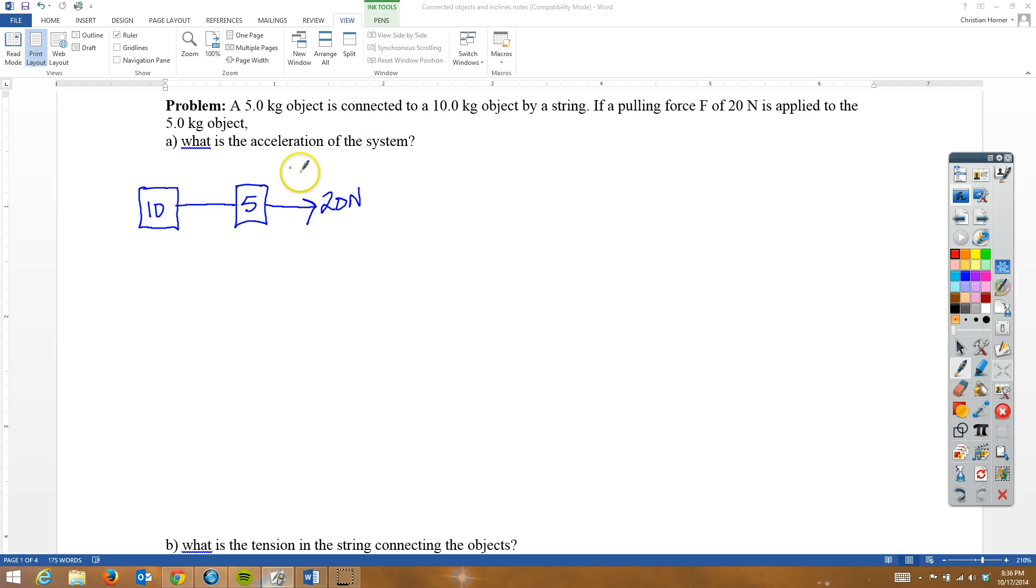So let's go ahead and circle our system so we know what it is, and they want to know what is the acceleration of the system. At this point, what we need to do is break everything down into a couple of different objects. So let's call this one M2. We'll also refer to it as Box2, and then this will be M1 or Box1. So for Box2, let's go ahead and put a dot right here. And for Box1, we're going to put a dot right here.